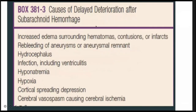Other causes of delayed deterioration after subarachnoid hemorrhage include increased edema around the hematoma, re-bleeding of aneurysm, hydrocephalus, infection including ventriculitis, hyponatremia, hypoxia, and cortical spreading depression.